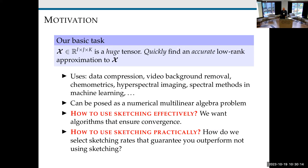Our basic task is the same as everyone was looking at. We have some huge tensor — in this case, we're going to do a three-mode or order-three tensor. Our goal is to quickly find an accurate low-rank approximation to X. It could be CPD, it could be Tucker — we're going to go with CPD. This has a lot of uses and can be posed as a numerical multilinear algebra problem.